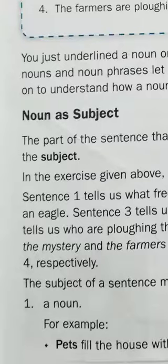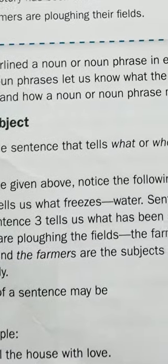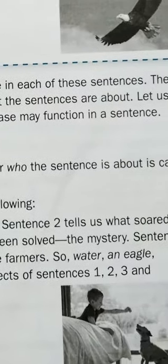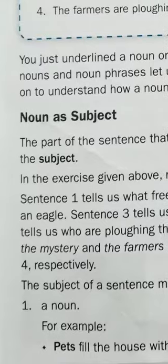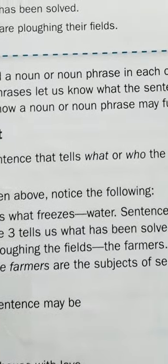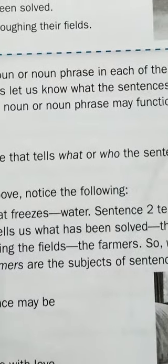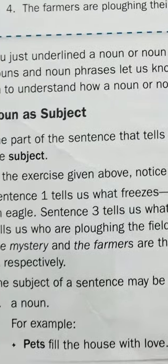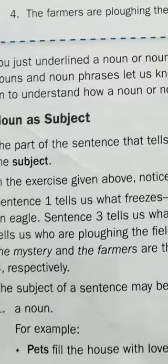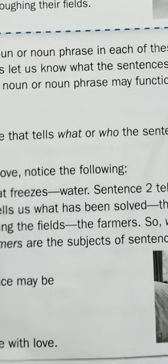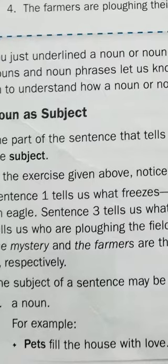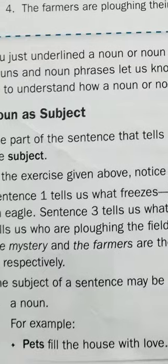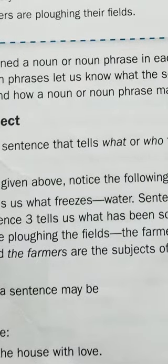The first function of a noun is as a subject. The part of a sentence that tells what or who the sentence is about is called the subject. When we ask the question 'what' or 'who', the answer will be the subject. For example, in the exercise given above, notice the following sentence: 'Water fridges.' When we ask 'what fridges?', the answer will be 'water.' So water is the subject.